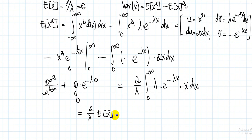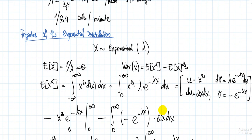Since E[X] = 1 over lambda, we have E[X²] = 2 over lambda squared. The variance equals E[X²] minus (E[X])² = 2 over lambda squared minus 1 over lambda squared = 1 over lambda squared. So the expected value of the exponential distribution is 1 over lambda, and the variance is 1 over lambda squared.